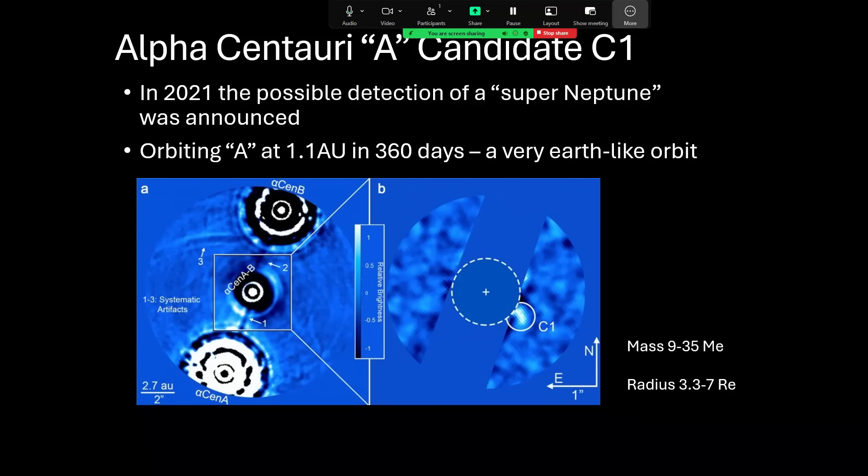So, in fact, Neptune itself would be 16 times the mass of the Earth, so right in the middle of that range. So a super Neptune is going to be at the upper end of that scale, perhaps. So that was four years ago in 2021. And at the time when I first talked about this, I said that James Webb Space Telescope was due to search for planets around Alpha Centauri in July and August of 2023. And we have some results.